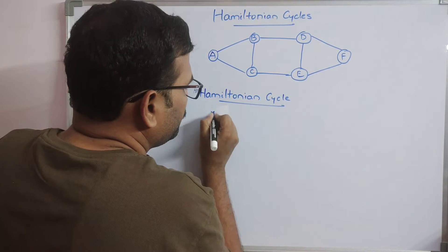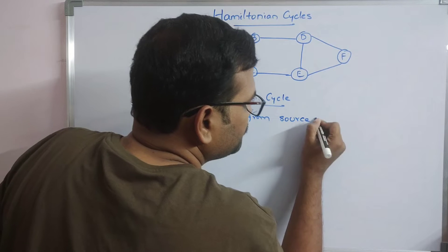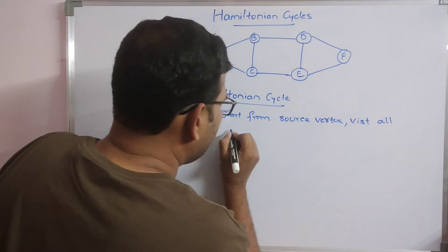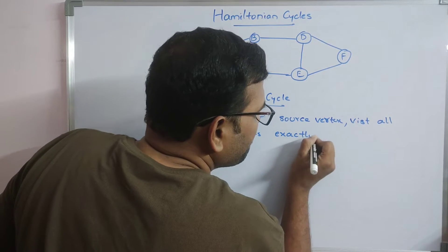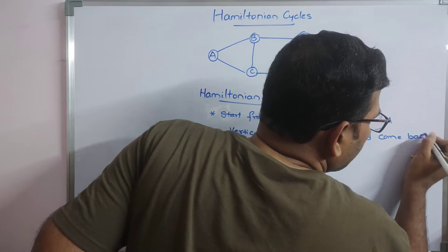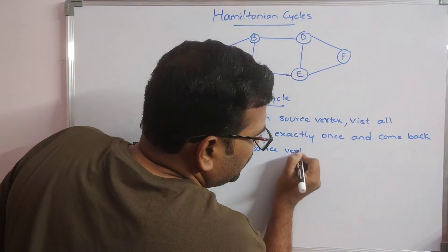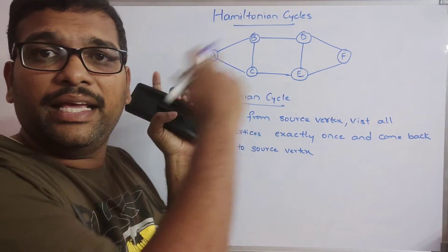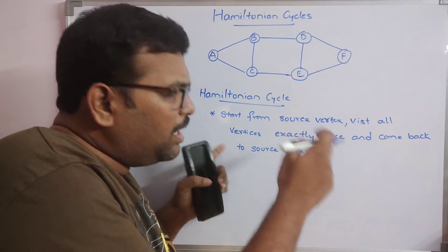A Hamiltonian cycle starts from the source vertex, visits all vertices exactly once, and comes back to the source vertex. We need to find out how many Hamiltonian cycles exist in this particular graph using backtracking.